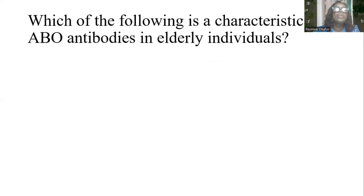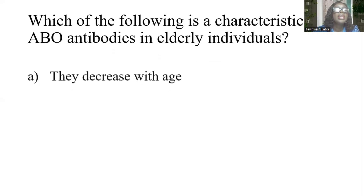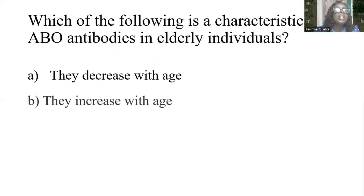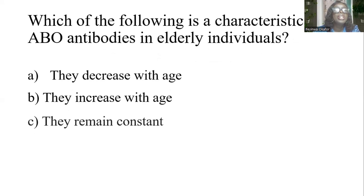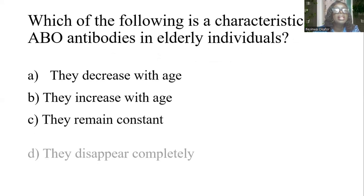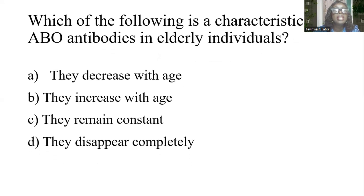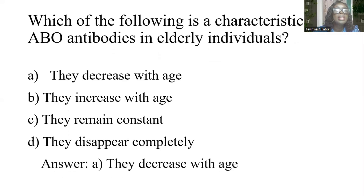Which of the following is a characteristic of ABO antibodies in elderly individuals? A) They decrease with age. B) They increase with age. C) They remain constant. D) They disappear completely. The answer is A: they decrease with age.